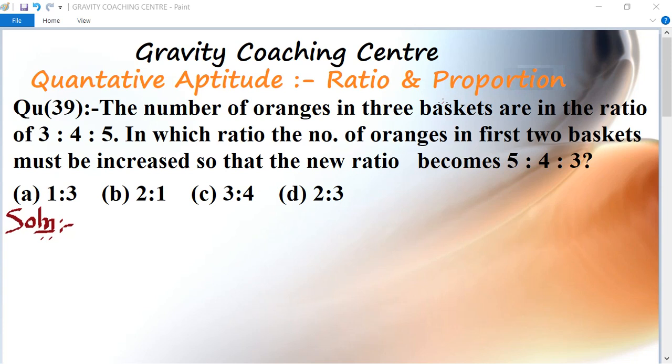The number of oranges in three baskets are in the ratio of 3 is to 4 is to 5. In which ratio must the number of oranges in first two baskets be increased so that the new ratio becomes 5 is to 4 is to 3?